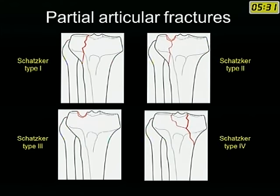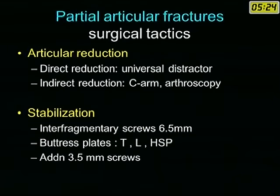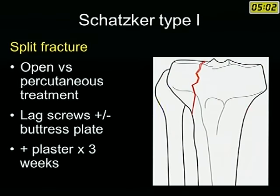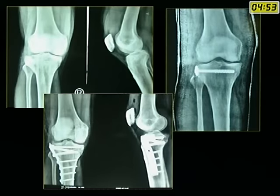Partial articular fractures are Schatzker types 1 to 4. Articular reduction can be done by direct visualization using a universal femoral distractor, or indirect reduction with the C-arm. Stabilization can be done with single interfragmentary screws supplemented with a buttress plate or 3.5mm screws. For Schatzker type 1, percutaneous single screw fixation or buttress plating is appropriate. Single screw fixation should be supplemented with a cast as it is not stable enough to allow knee mobilization alone.